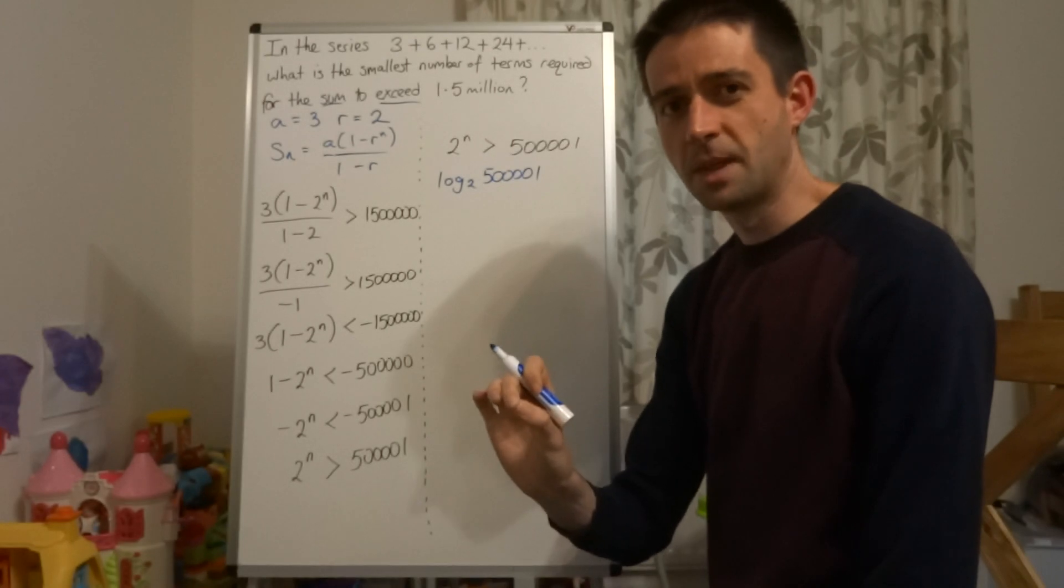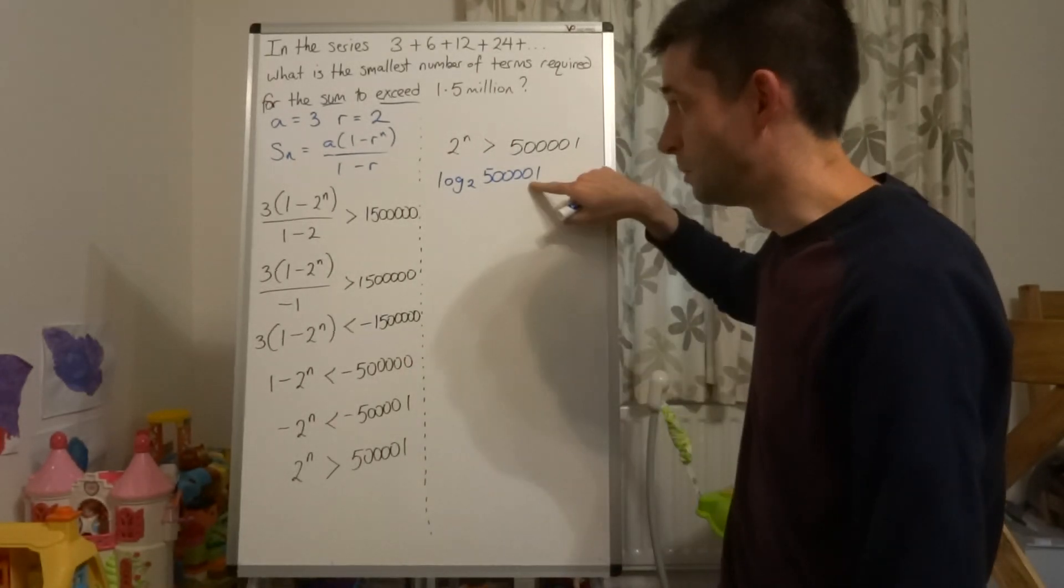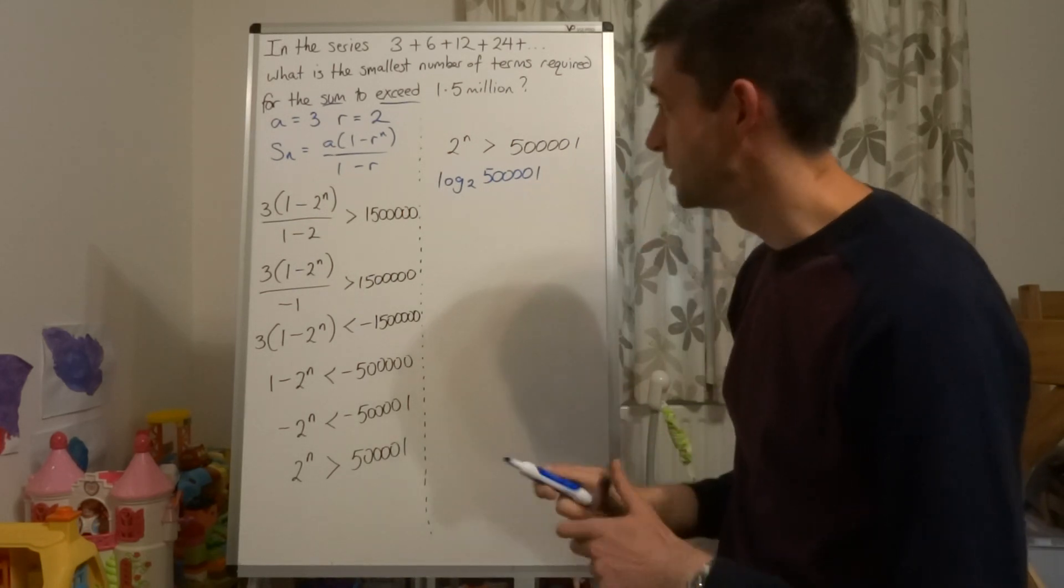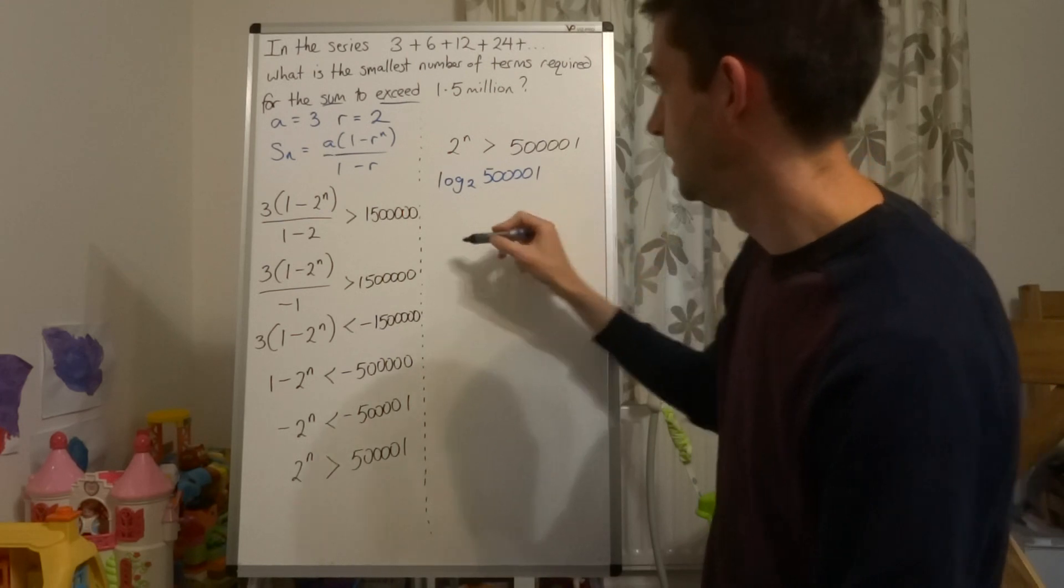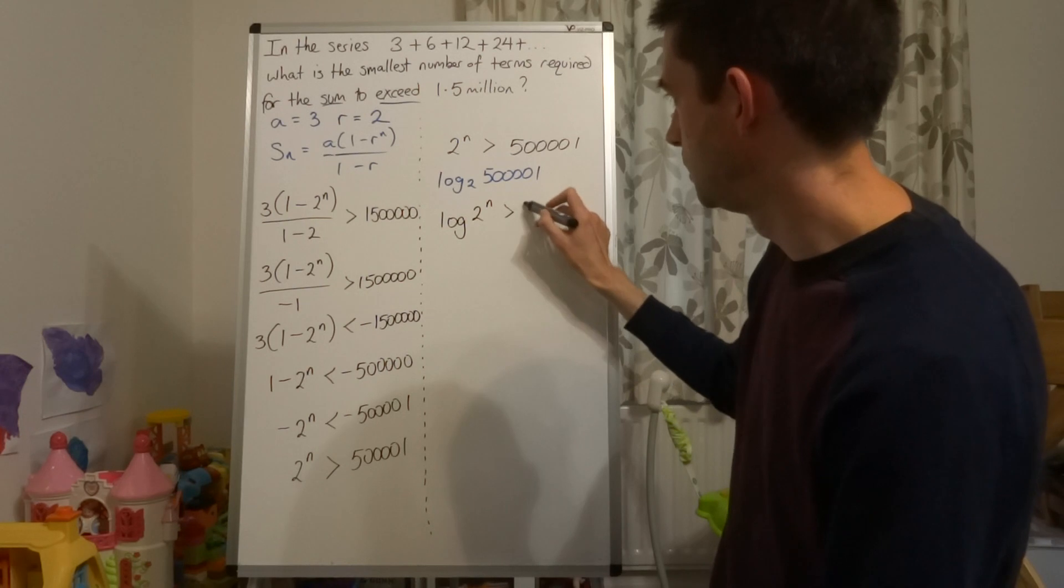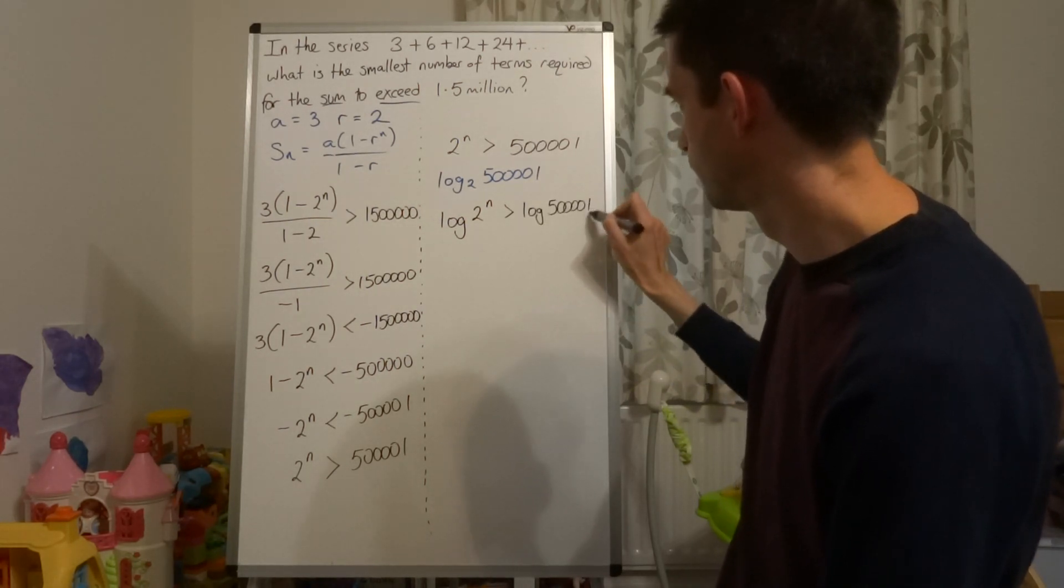And that's great, except that we need to keep the inequality symbol in there. And we need to know, well, is it more than this number or is it less than this number? So my preference, rather than jumping to this, is to take logs of both sides and say log 2 to the power of n is greater than log of 500,001.